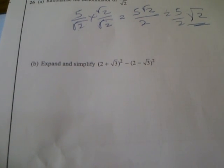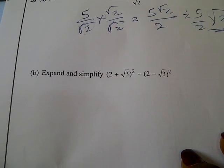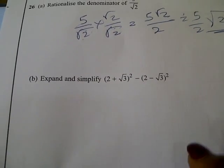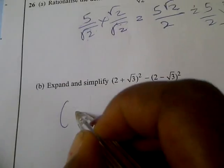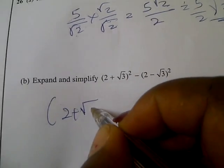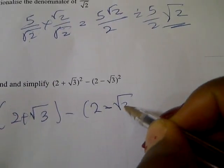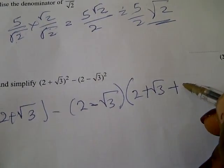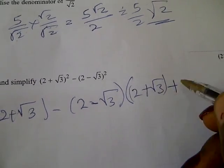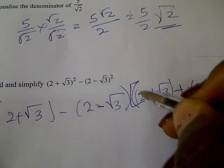Question 6B says: expand and simplify (2 + √3)² minus (2 − √3)². Using difference of two squares, you'd have (2 + √3 minus 2 minus √3) into (2 + √3 + 2 minus √3), as the difference of squares formula.